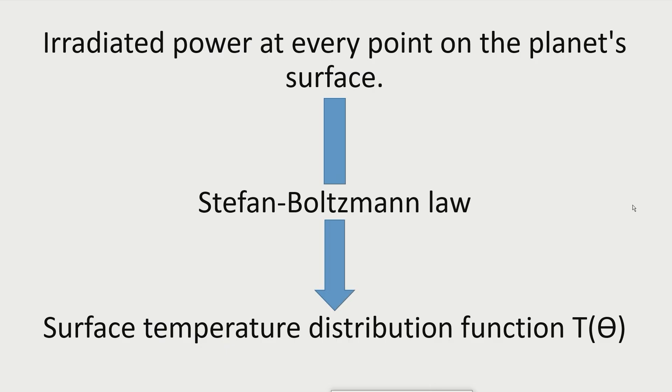To avoid this source of error, a model would have to be developed that allows the irradiated power to be calculated at every point on the planet's surface. If one knows the radiated power at every point on the planet's surface, one can use the Stefan-Boltzmann law to calculate the surface temperature for every point, without having to average the irradiated power over large areas.